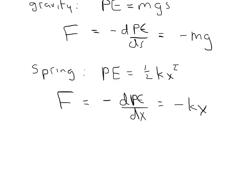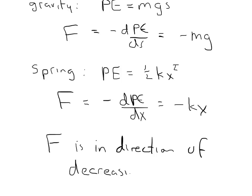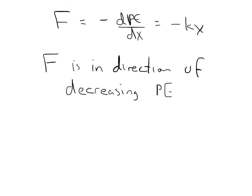The key point here is that if we have some arbitrary potential, the force points essentially downhill — it's going to point an object in the direction of the minimum of potential energy. The force is in the direction of decreasing potential energy. For springs, this means it tries to return to equilibrium, and for gravity, it tries to take you to the lowest energy spot.